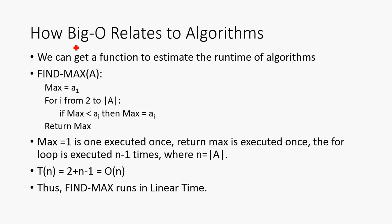So, how does this Big-O relate to algorithms? Well, we can find a function to estimate the running time of an algorithm, and then we can determine its asymptotic behavior from there. So, let's take, for example, our FIND-MAX function. We can notice that this instruction right here, the max equals a₁, and return max, these are both executed once, so these are both what we call Big-O of 1. They run in constant time.